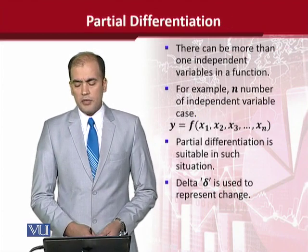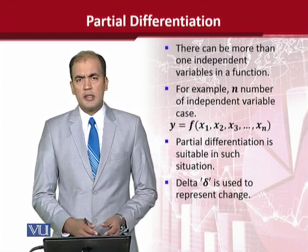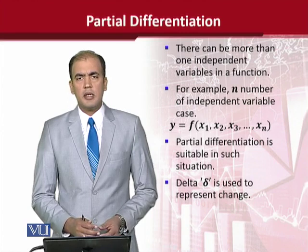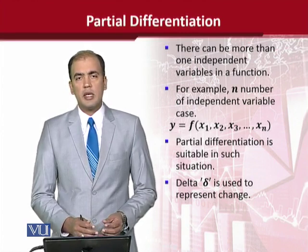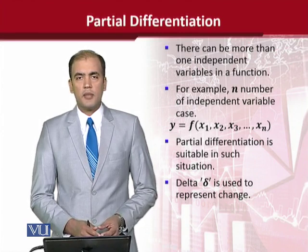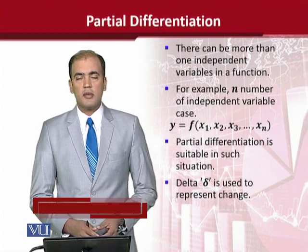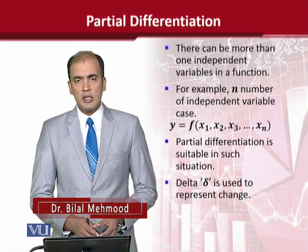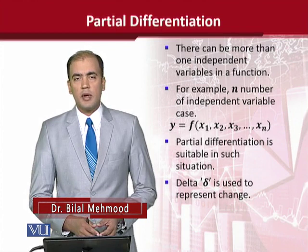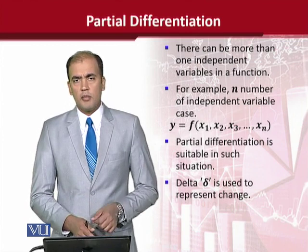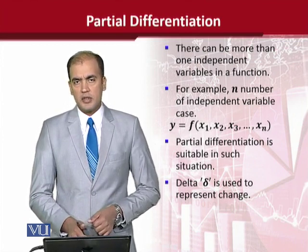What we are trying to observe in this case is that we can have more than one independent variable. When we talk about a function, there is one possibility that there is one independent variable. But we cannot rule out the possibility that there exist more independent variables. So when this situation arises, we have to depend upon partial differentiation. Let us see a functional form of such a function before we go to this partial differentiation principle.